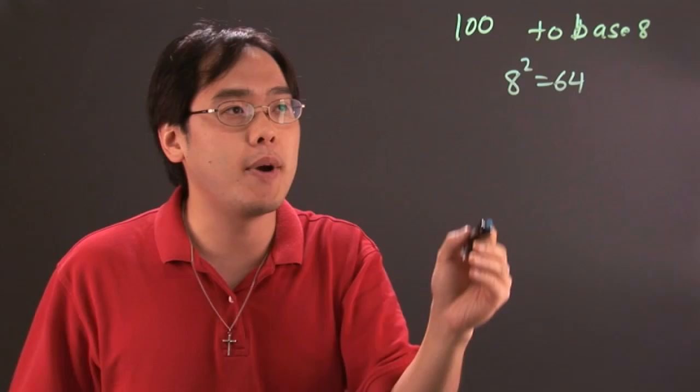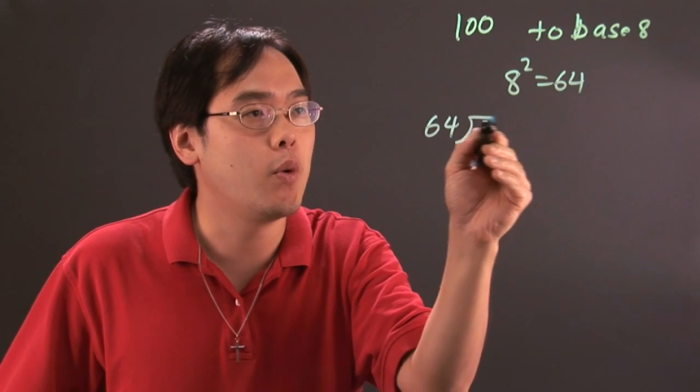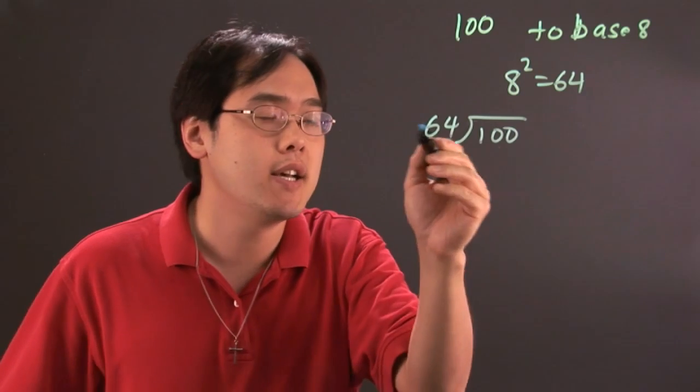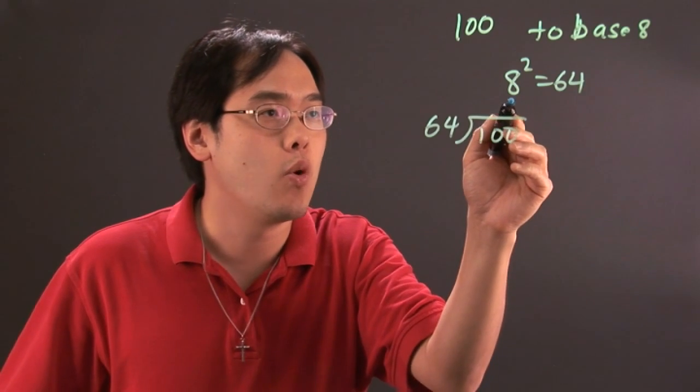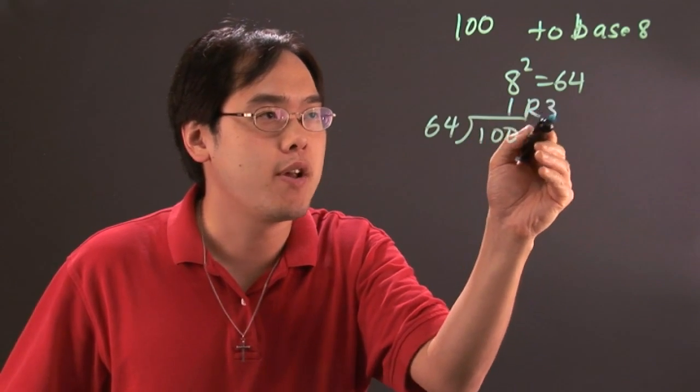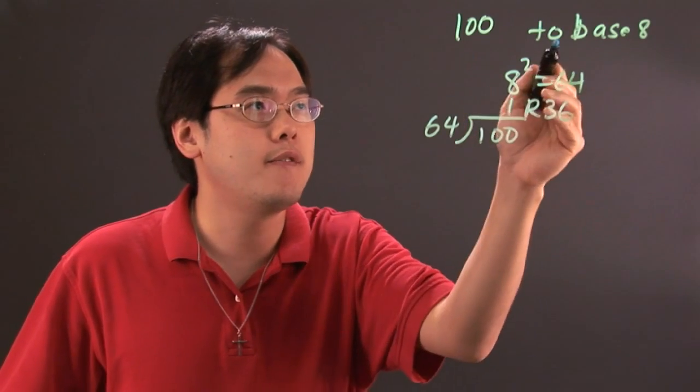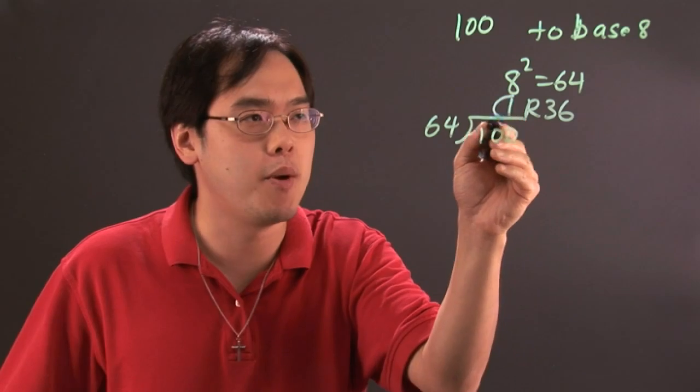So we need to think about 64 going into 100. Now for the sake of time we're going to do this a little bit fast. 64 goes into 100 one time remainder 36. So the first digit of this new number base is going to be the number 1.